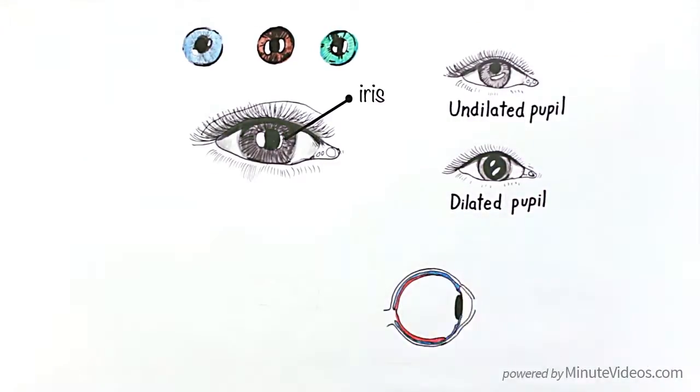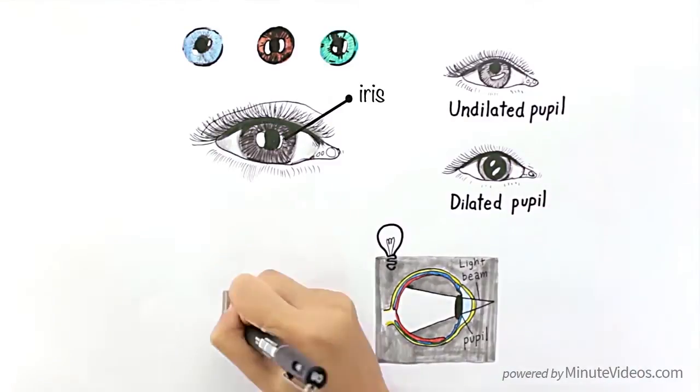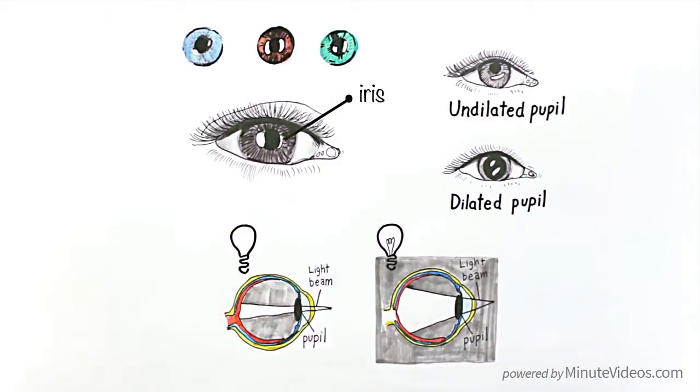So when it's dark, the pupil becomes larger, and when it's bright outside, the pupil becomes smaller.